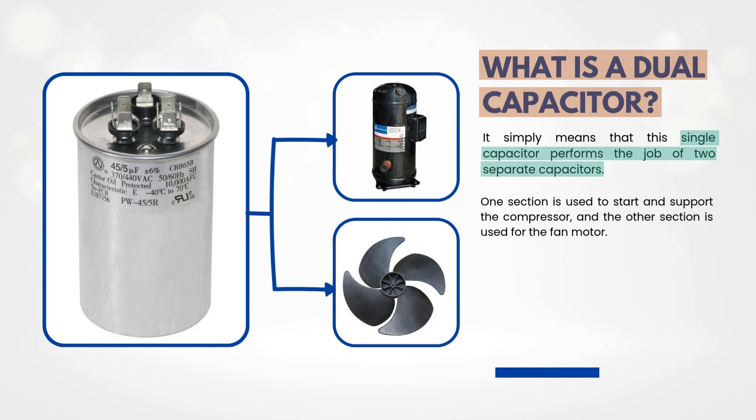One section is used to start and support the compressor, and the other section is used for the fan motor. Instead of installing two different capacitors, manufacturers use one dual capacitor to save space and wiring complexity.